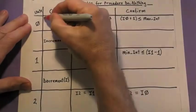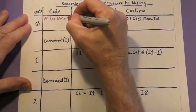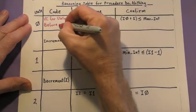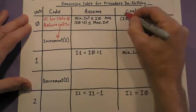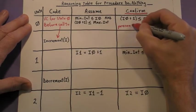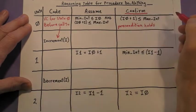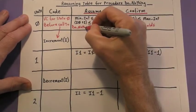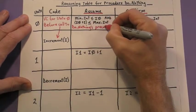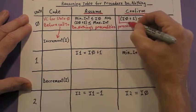We'll start with the verification condition for state 0 right before the call to increment. We must confirm that the precondition for increment holds, and we get to assume do nothing's precondition. This is where our verification condition for state 0 comes from.